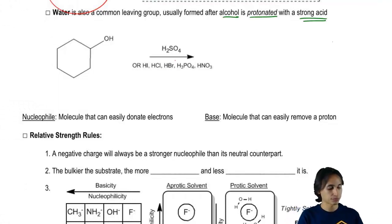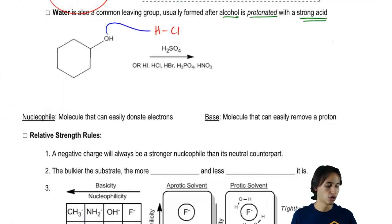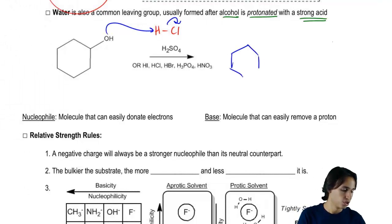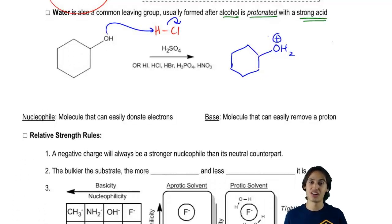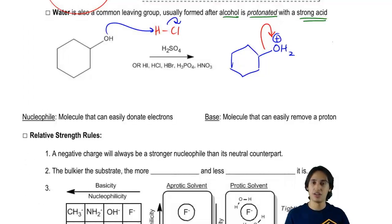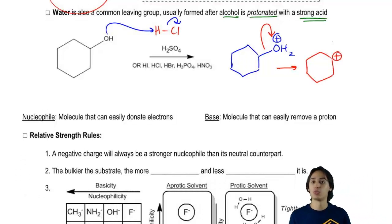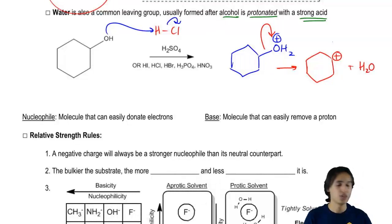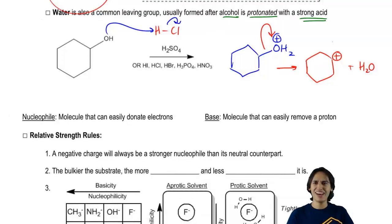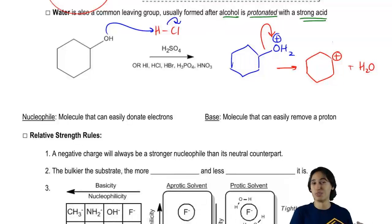Here's how it works: expose the alcohol to a strong acid and the alcohol grabs the H and becomes protonated, giving you OH2⁺. That's not stable because it has a formal charge. So in the next step, it can leave all on its own just like an alkyl halide would in a mechanism, giving you a carbocation — if this is an SN1 or E1 reaction — plus water as the leaving group. Is water stable? Yes, it's super stable because it's just neutral. So by protonating the alcohol first, you turn a bad leaving group into a really good one.